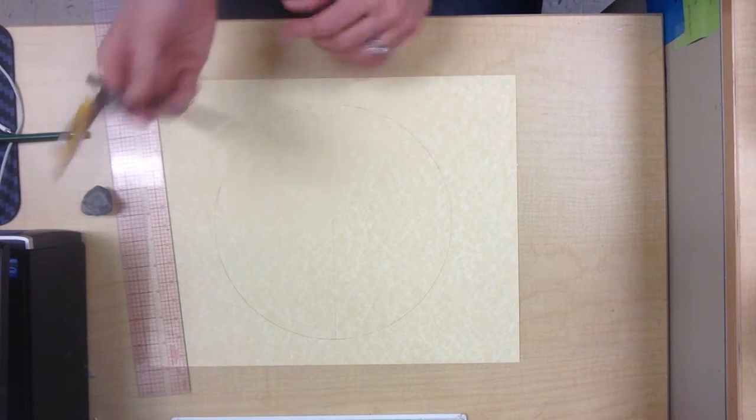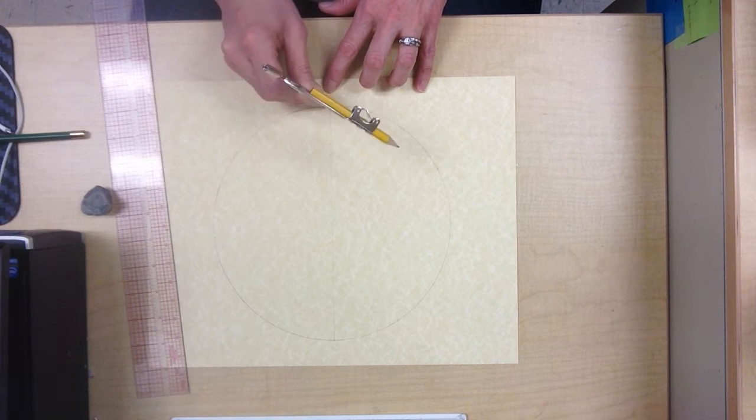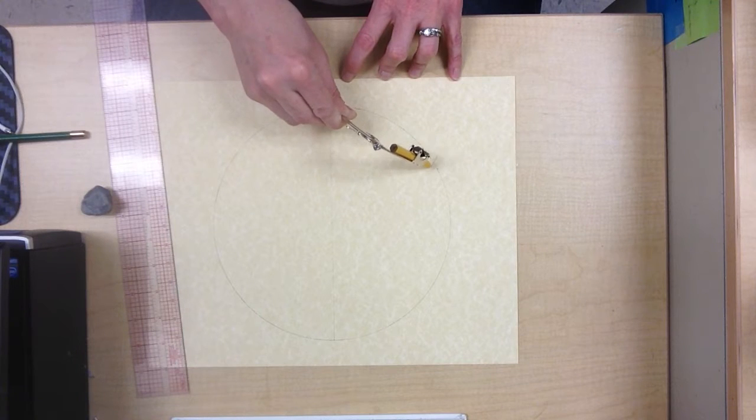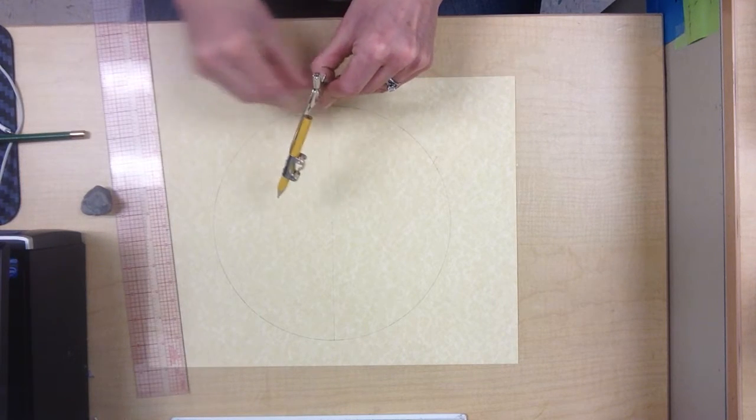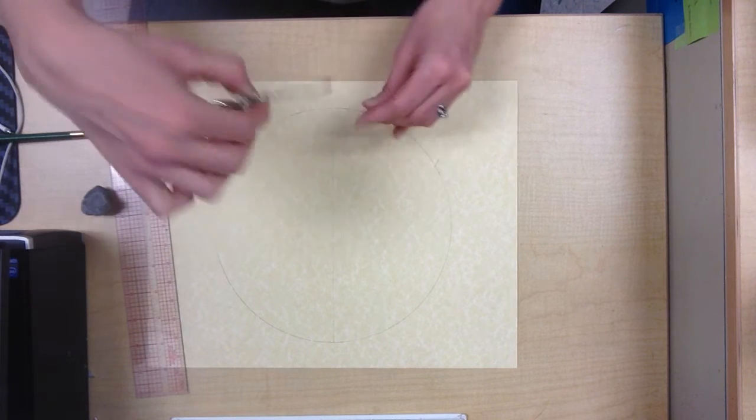Then what they do is they take the point of their compass, put it at 6 o'clock. And when you put it at 6 o'clock, you get your 8 o'clock line and your 4 o'clock line.